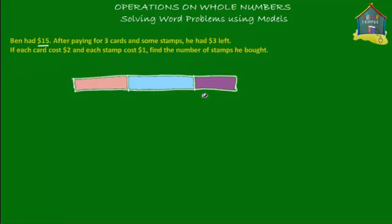Now how much did he have left? He had $3 left. So this block is $3 — that's the $3 he had left. And this whole bar is $15, which is the amount of money he had at first.